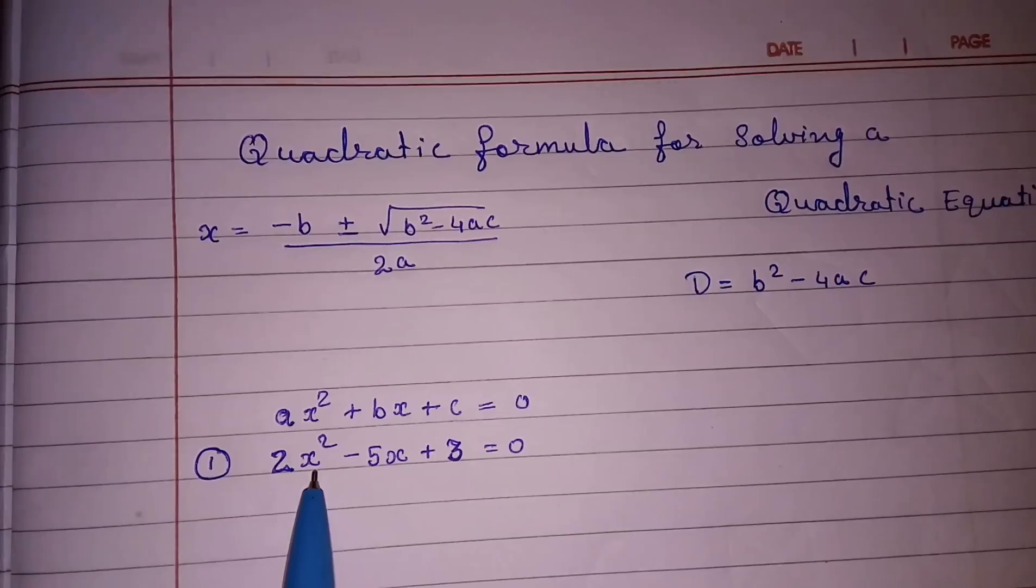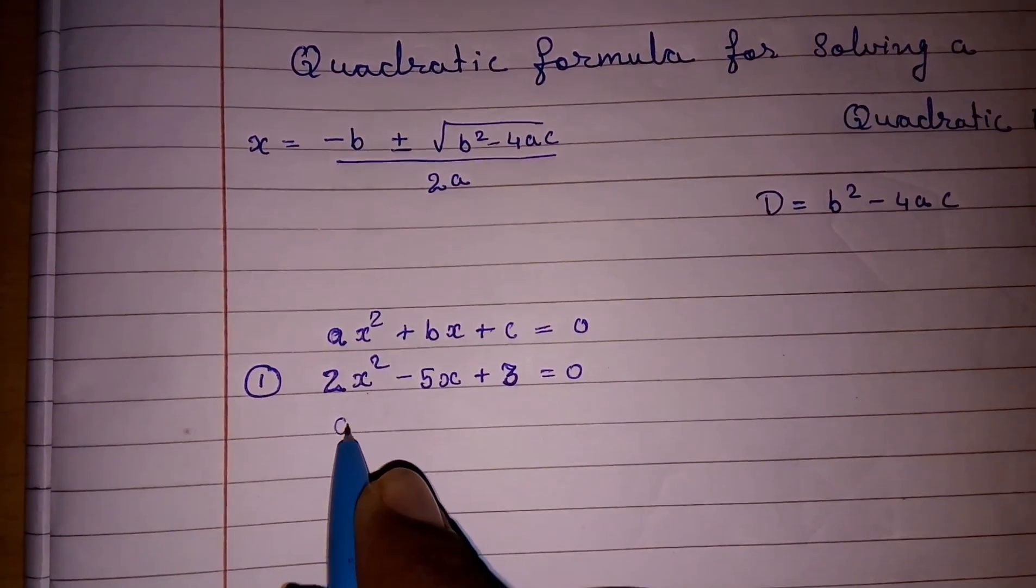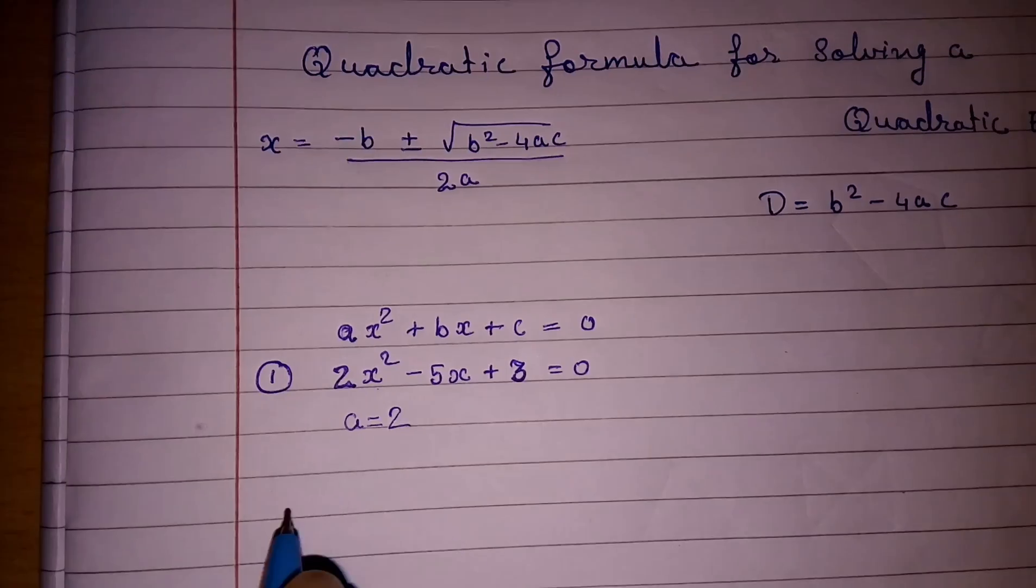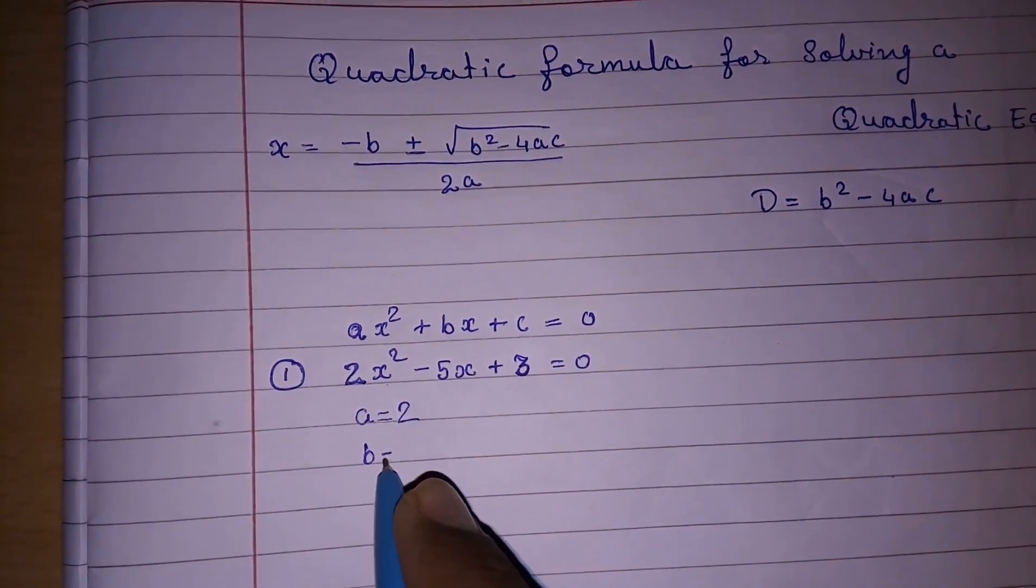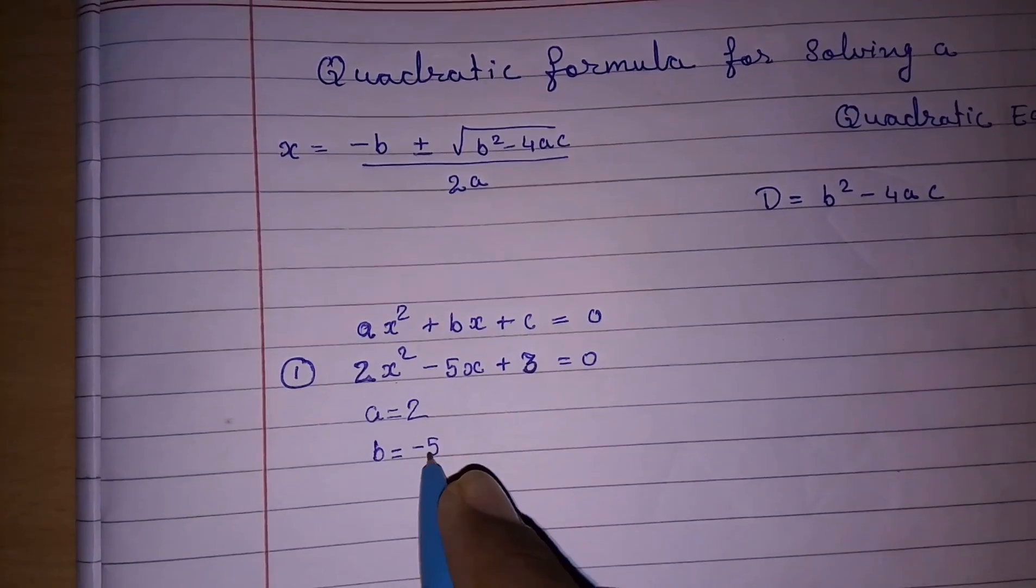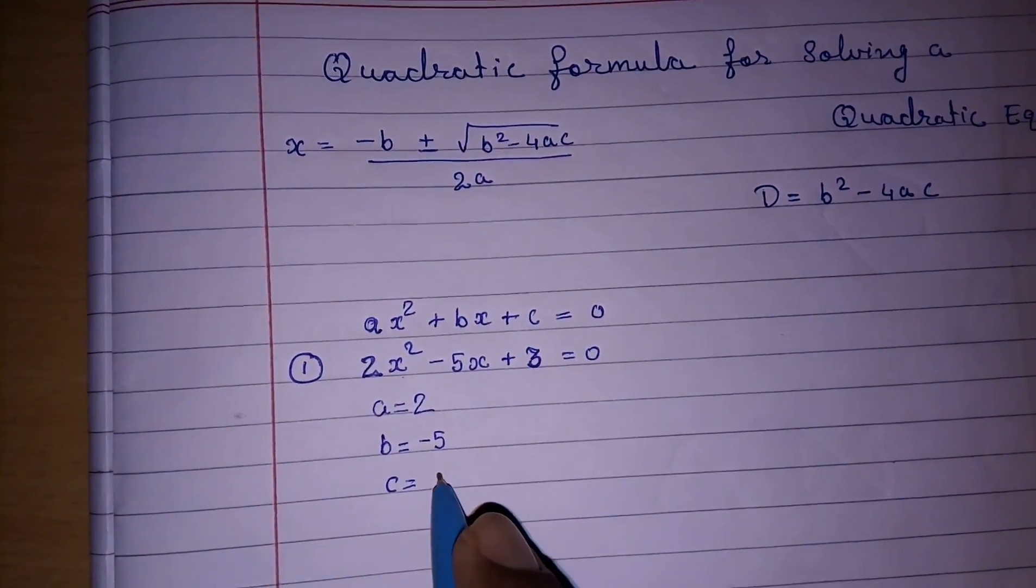The coefficient with x square, the number is called a. So here we are having a = 2. Then number with x called b. b = -5. And what is c? c means the last number, that is 3.